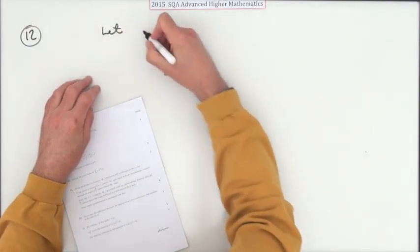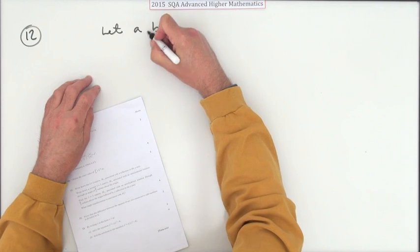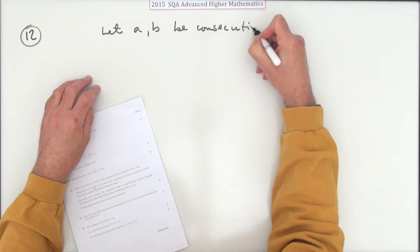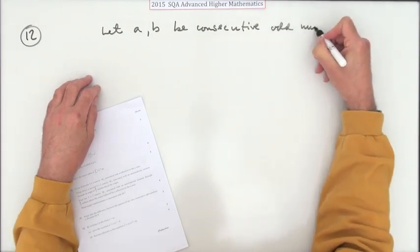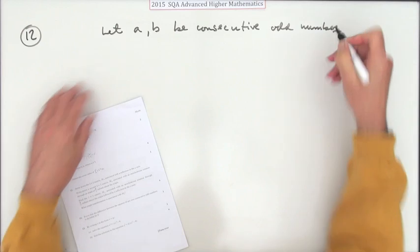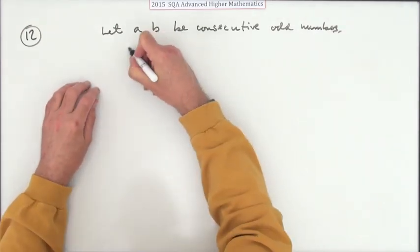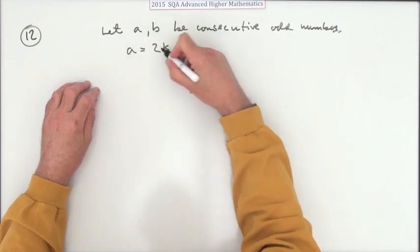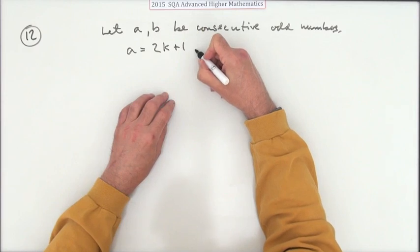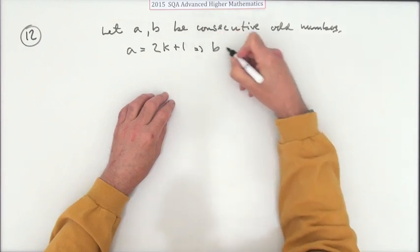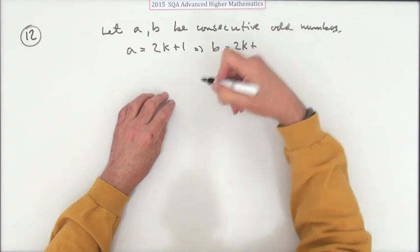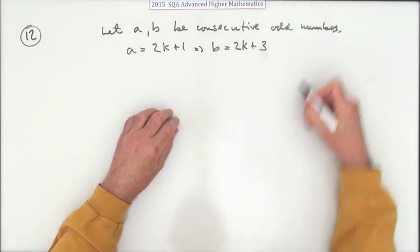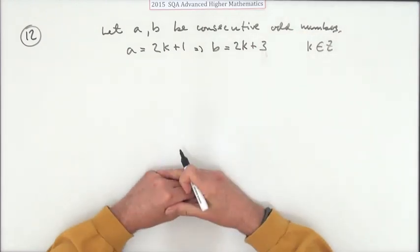Start off by establishing what we're going to work with. Let A and B be consecutive odd numbers. Establish that they actually are odd numbers, so let A equal some multiple of two plus one — that is, A = 2K + 1. In that case, B, being the following consecutive odd number, would be two steps ahead, so B = 2K + 3, where K is an integer.